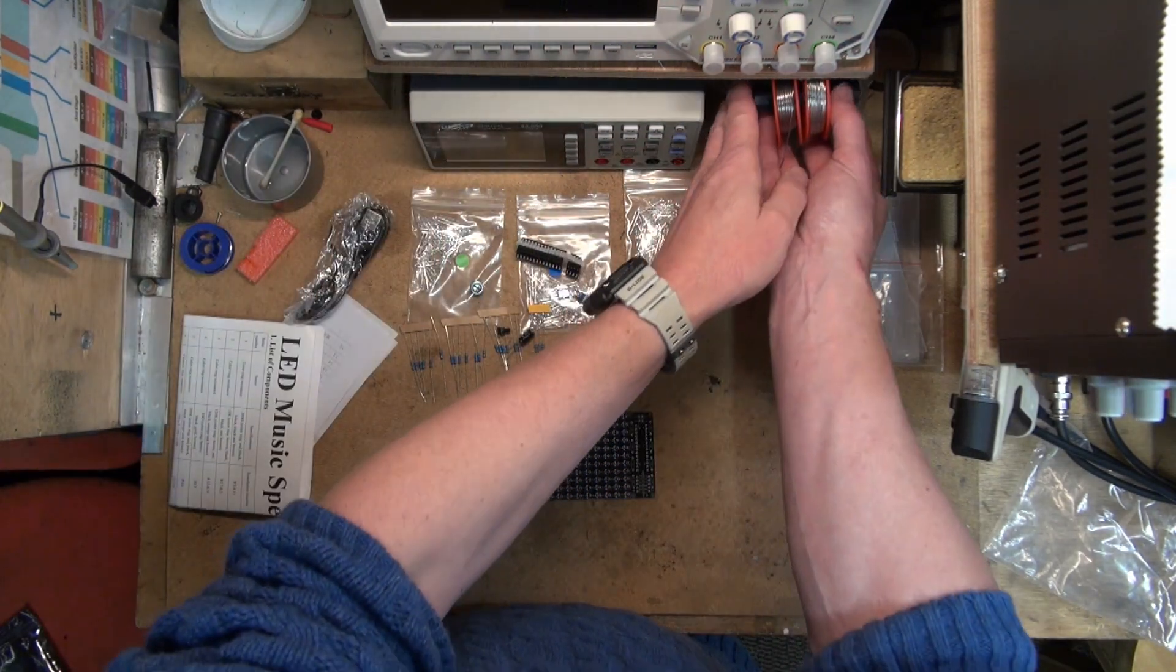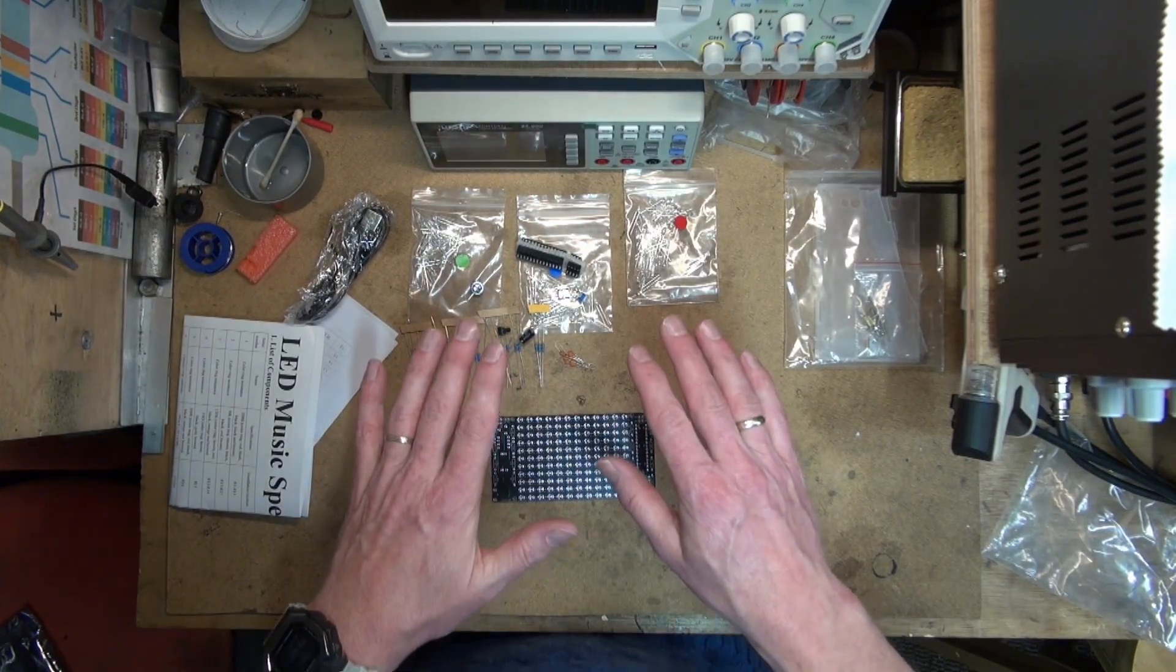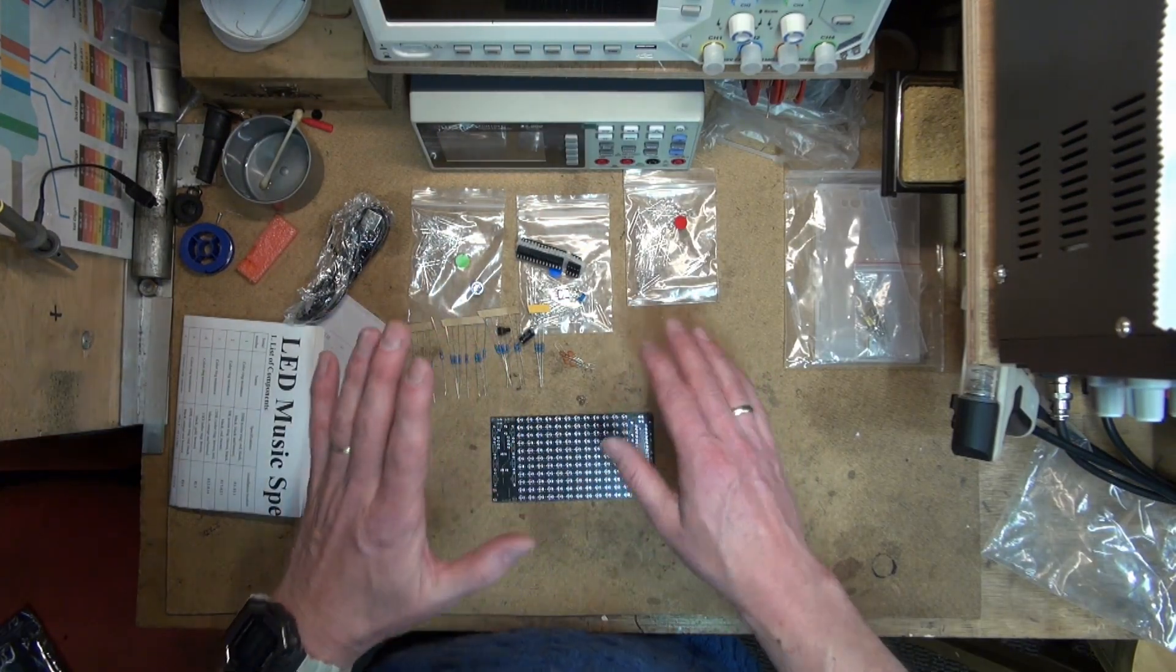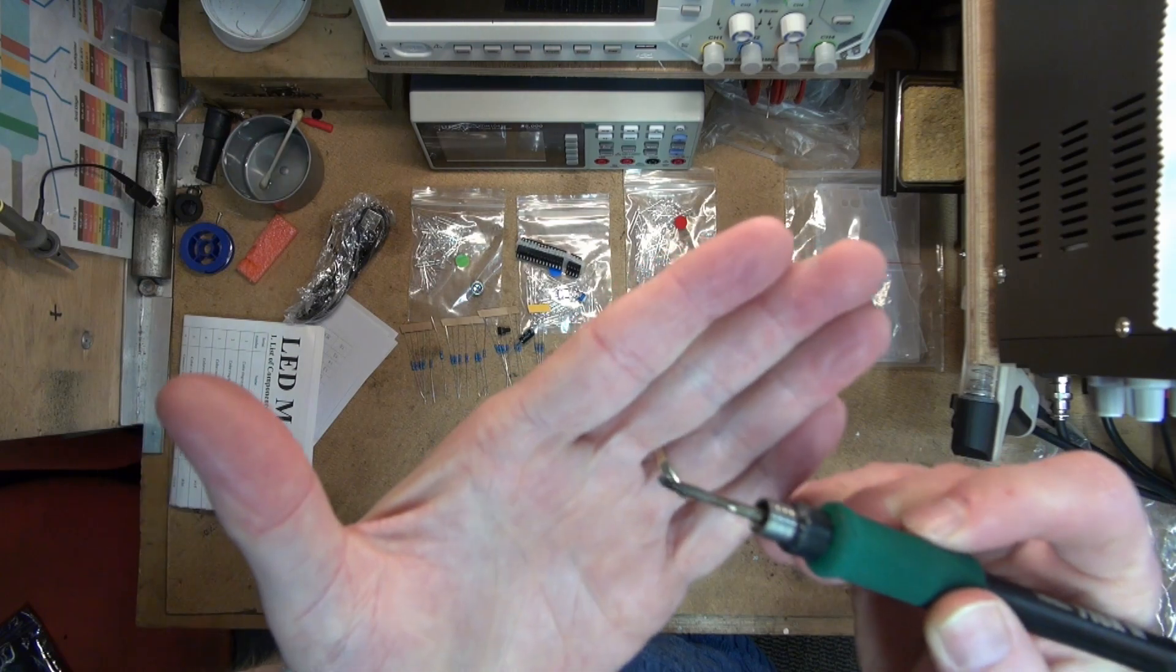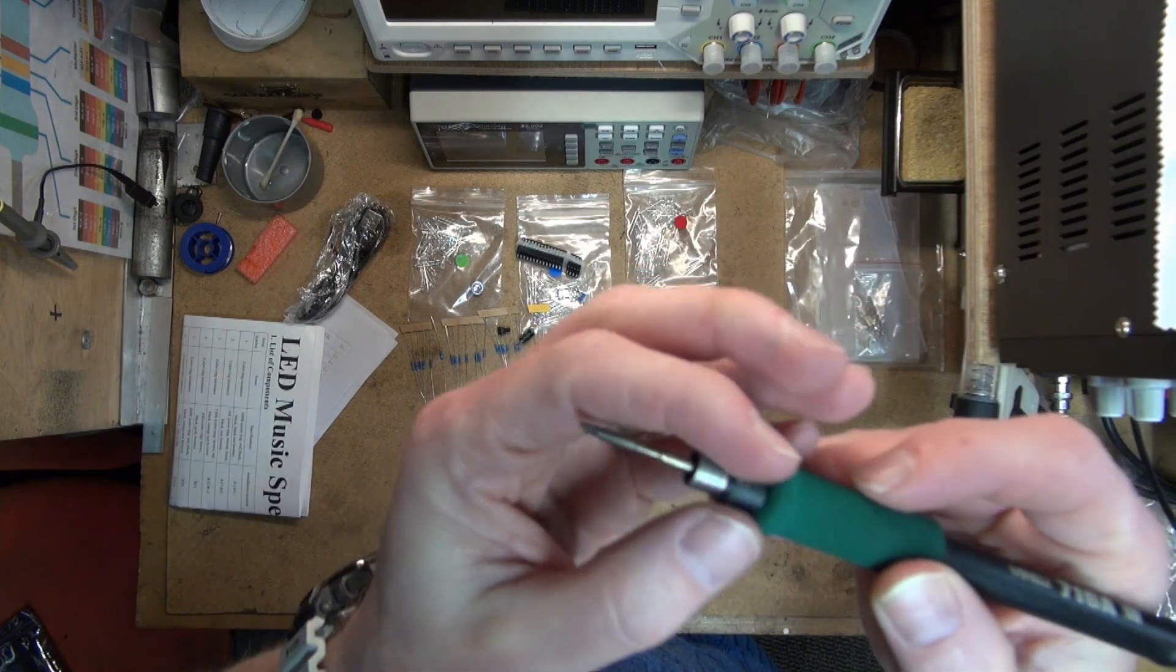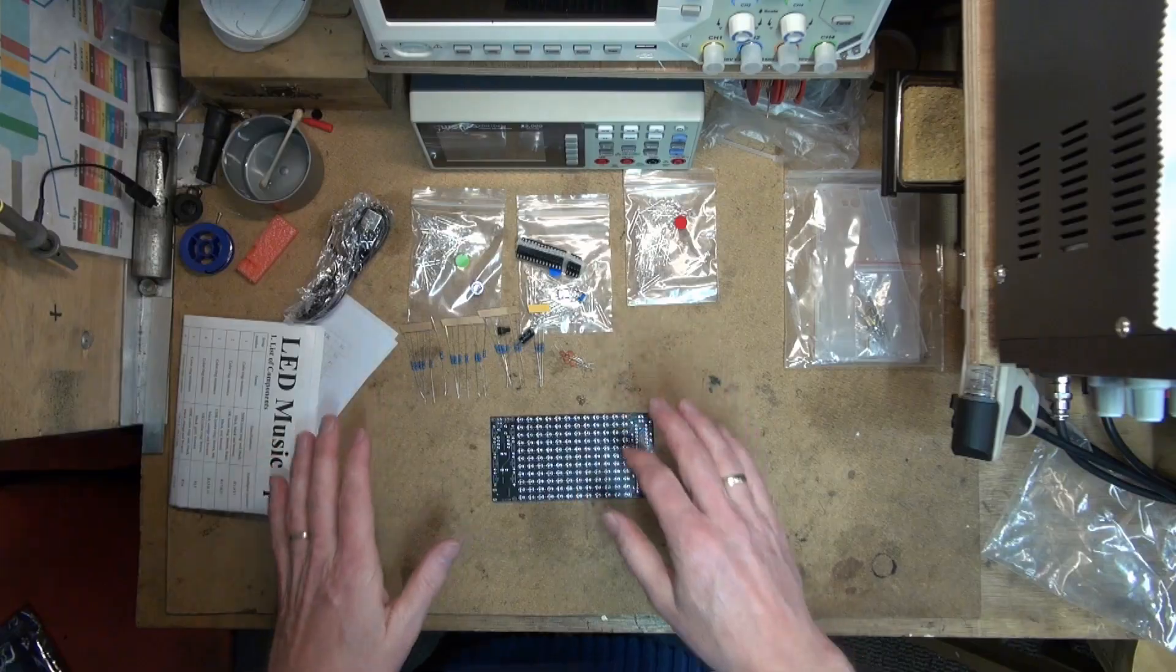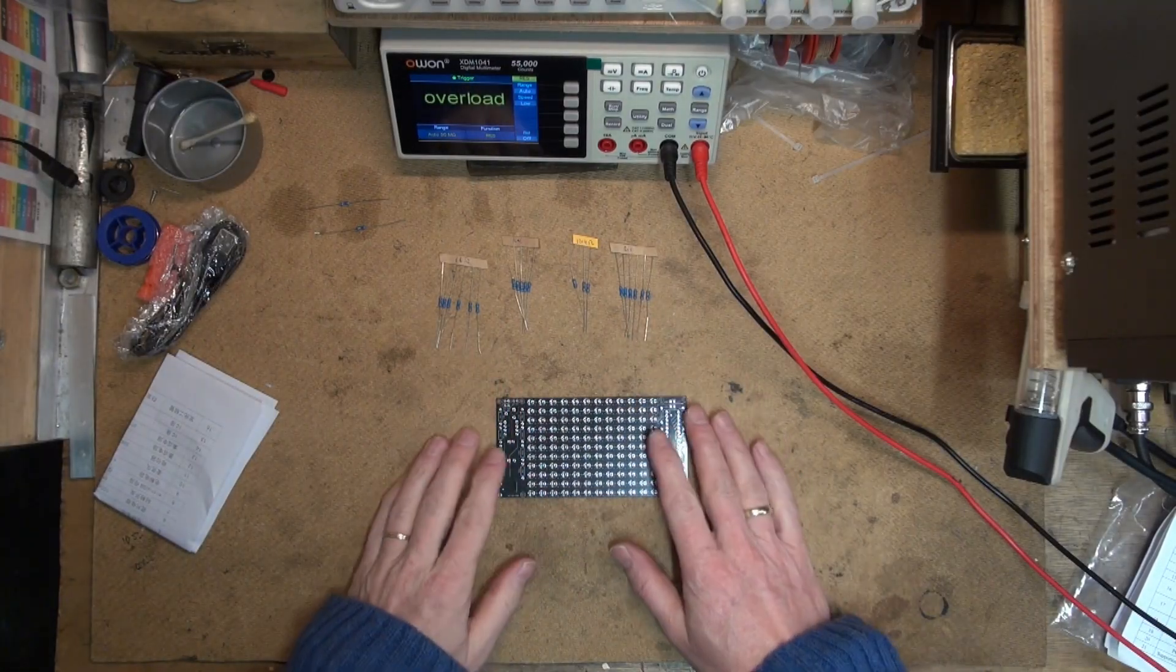I use my little UWA soldering station. I have it set to 350 degrees Celsius. I like to use this knife blade soldering tip. It's real nice. So I'm gonna get set up. Alright, let's get started.